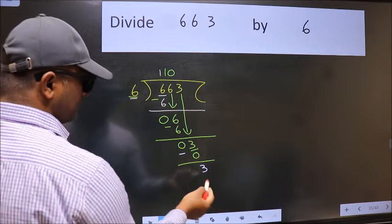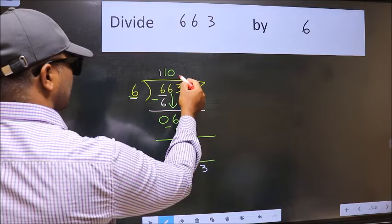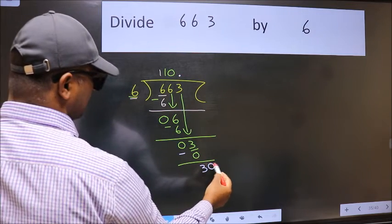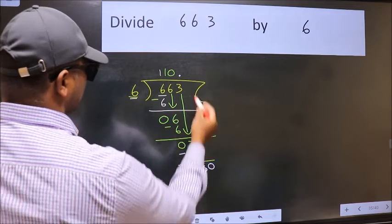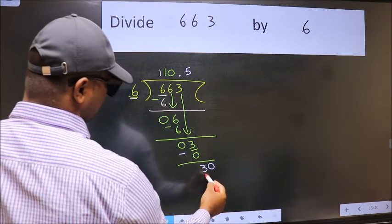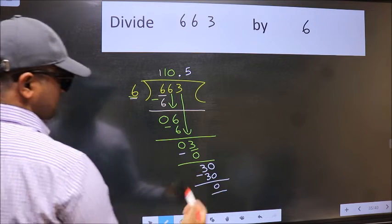So 30. When do we get 30 in the 6 table? 6 five 30. Now we subtract, we get zero.